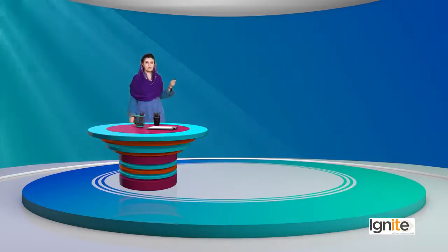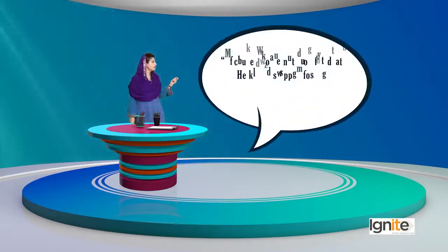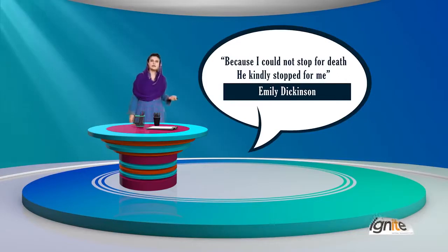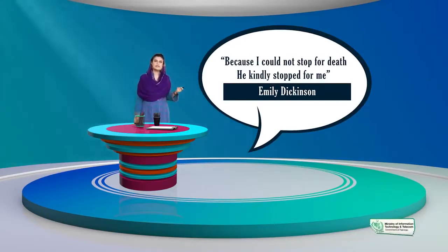Emily Dickinson एक बहुत मशहूर poet हैं। उनकी एक poem है "Because I could not stop for Death — He kindly stopped for me।" Death के लिए वो नहीं रुक सकती थीं, तो Death उनके लिए रुक गई। उन्होंने death को characterize किया है 'He' करके — जैसे वो एक male person है।